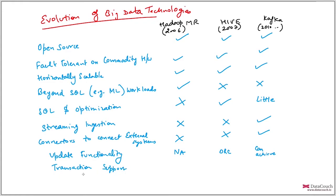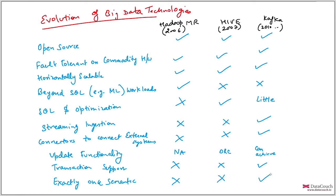Exactly-once semantics is another important factor. If there is any failure while processing a message, the message will be retried and may be processed twice, which impacts results significantly. Exactly-once semantics means we want to process a message once and only once, even if there are failures in the system. MapReduce does not give you that, Hive does not give you that, but Kafka does give you exactly-once semantics.